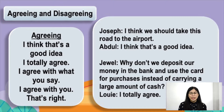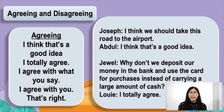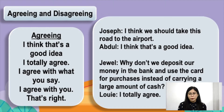To further understand that, we have here sample dialogues as a reference. First: Joseph says, 'I think we should take this road to the airport.' Abdul replies, 'I think that's a good idea.' Second: Jubal says, 'Why don't we deposit our money in the bank and use the card for purchases instead of carrying a large amount of cash?' Louie replies, 'I totally agree.' As you may notice, this conversation shows agreement between the speakers.